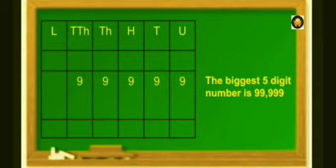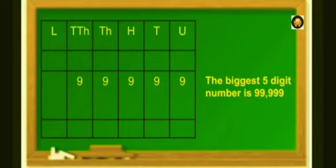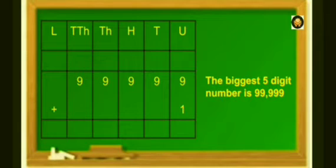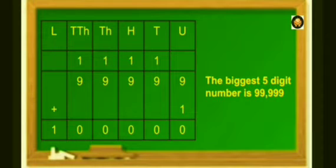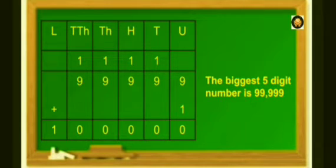Now, let's see how to read and write a 6-digit number. We know that the biggest 5-digit number is 99,999. If we add 1 to the greatest 5-digit number, we get 1,00,000, and 1,00,000 is equal to 1 lakh. So, the new place on the left of the 10,000 place is the lakhs place.